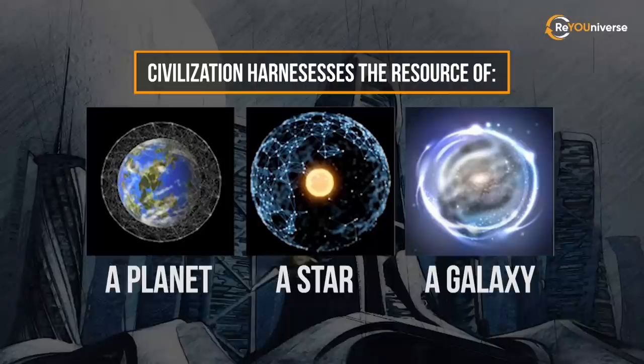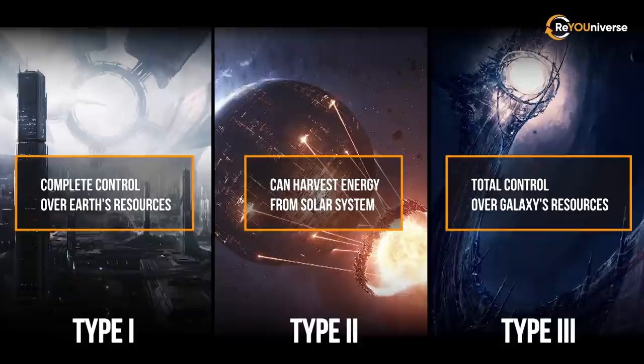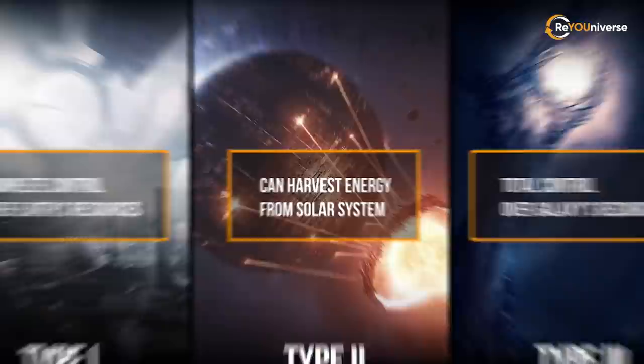A civilization that can use the energy emitted by its own star belongs to the second civilization type, according to the Kardashev scale. This is a method of measuring the level of a civilization's technological advancement, based on the amount of energy it can use.